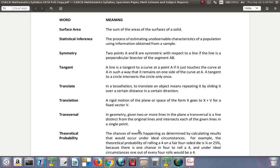Symmetry. Two points A and B are symmetric with respect to a line if the line is a perpendicular bisector of the segment AB. It's like that line is a mirror line. What you see on the left and the right, when you fold them around, they match. Tangent. A line is a tangent to a curve at a point A if it just touches the curve at A in such a way that it remains on one side of the curve. A tangent to a circle intersects the circle only once. Next time we continue by looking at translate and see what it means.